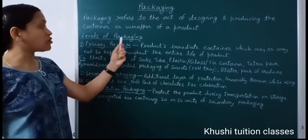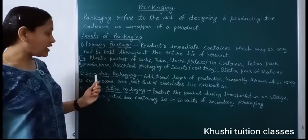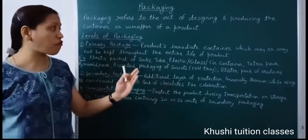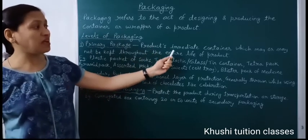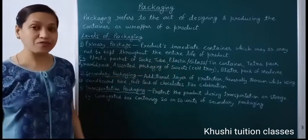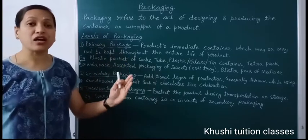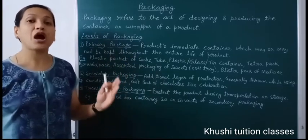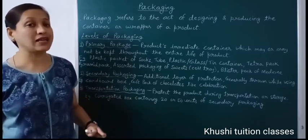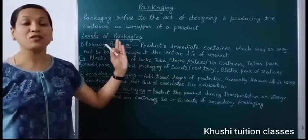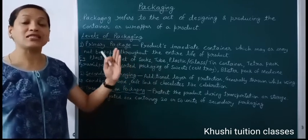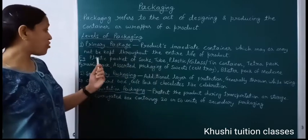Now there are three levels of packaging: Primary Package, Secondary Packaging, and Transportation Packaging. The first is Primary Package — this is the first level of packaging, which is the product's immediate container that may or may not be kept throughout the entire life of the product. Primary Package हमारे product का immediate container होता है, जो हमारे product को safe और protect रखता है, ताकि उसमें adulteration और contamination न हो। हम चाहें तो इस Primary Package को पूरे usage finish होने तक रख सकते हैं, या फिर starting में ही throw out भी कर सकते हैं।